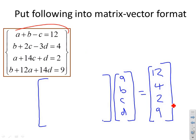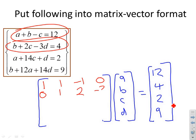The top equation is a plus b minus c: 1a, 1b, minus c, no d. The second equation: no a, 1b, 2c, minus 3d.